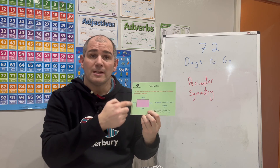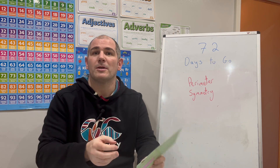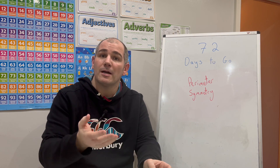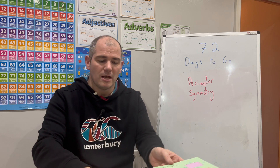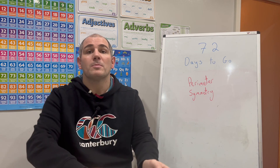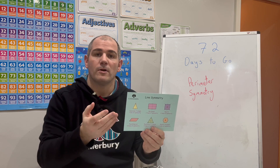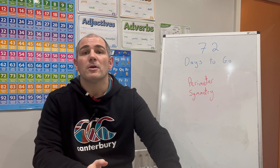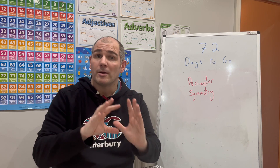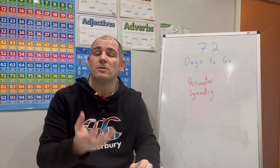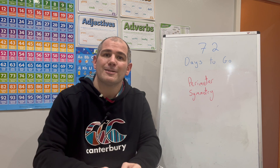Remember, perimeter is the distance around the outside of a shape. In this video we're going to be showing you how to do that, and I'll be giving you some questions to try yourself. We'll also be looking at symmetry — revision card number 32 — and rotational symmetry as well. So let's get started.